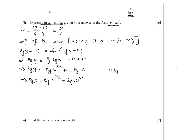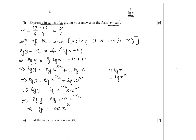The rule is: n times log x becomes log x to the power n. Using the addition rule of logarithms, log y equals log of (x to the power 5 over 2 times 10 squared). So log y equals log (100 times x to the power 5 over 2). Eliminating log from both sides, y equals 100 times x to the power 5 over 2. So a equals 100 and b equals 5 over 2.